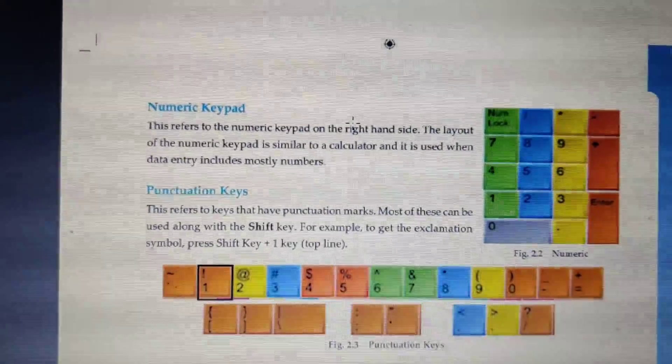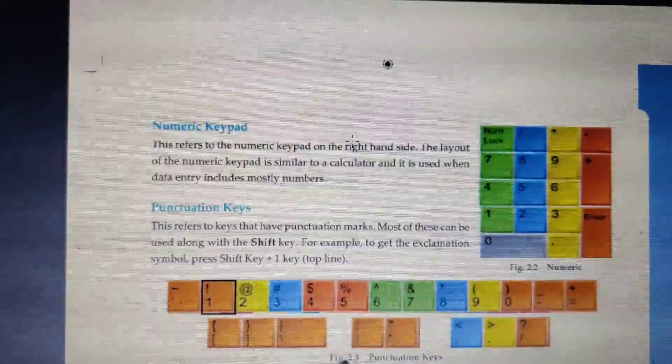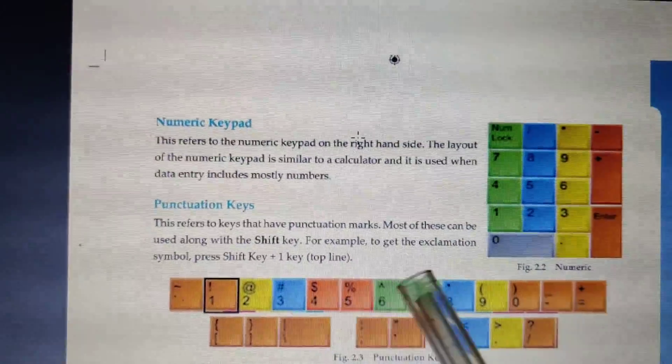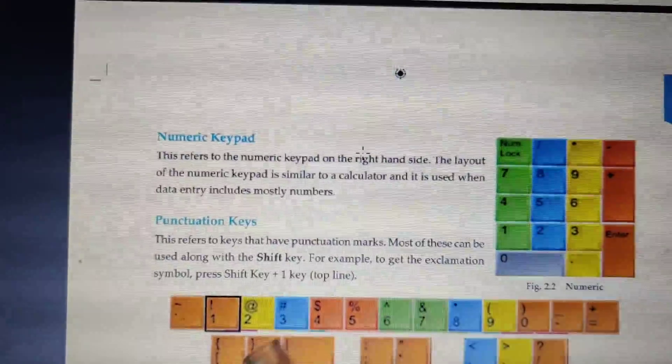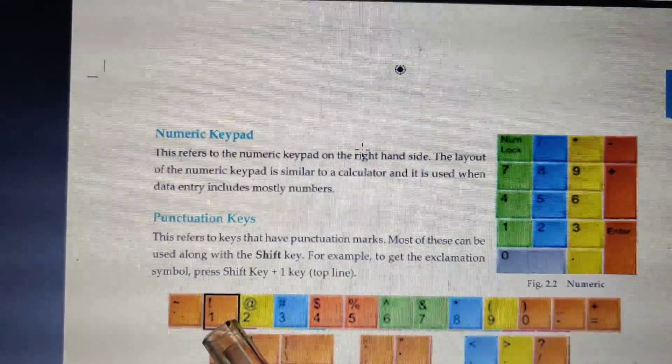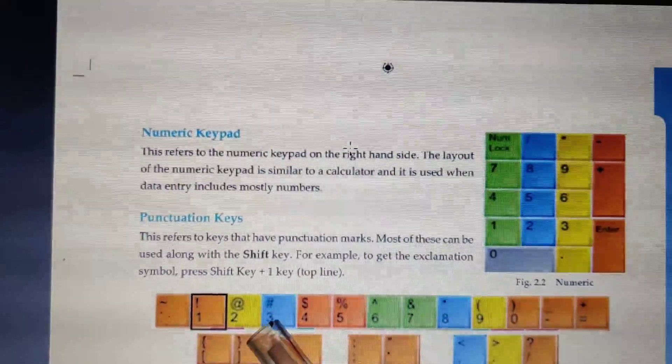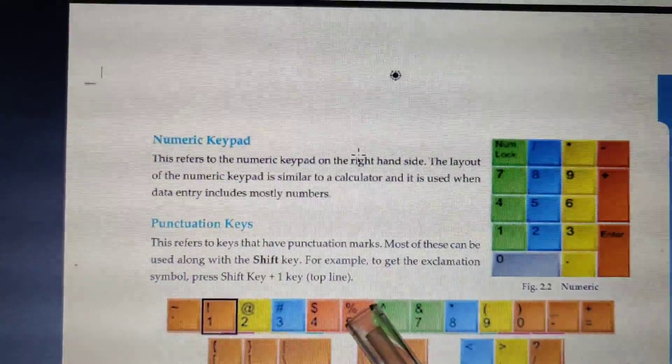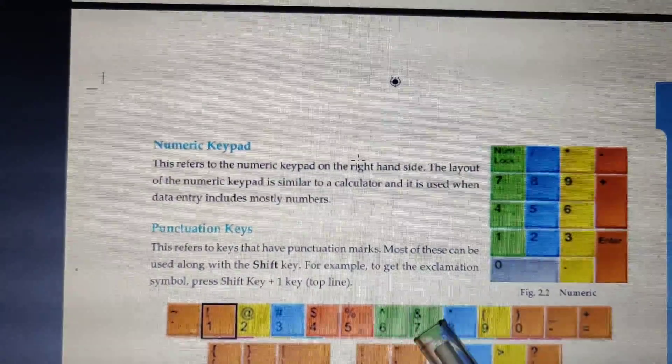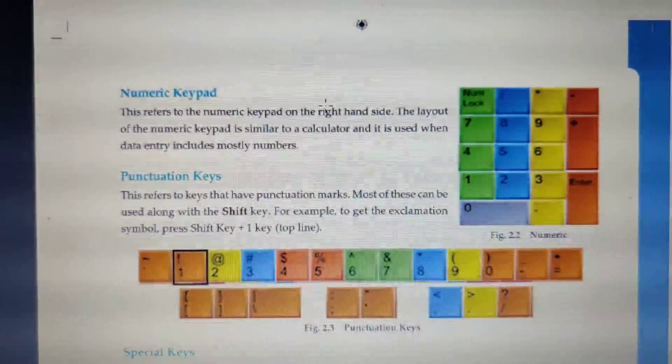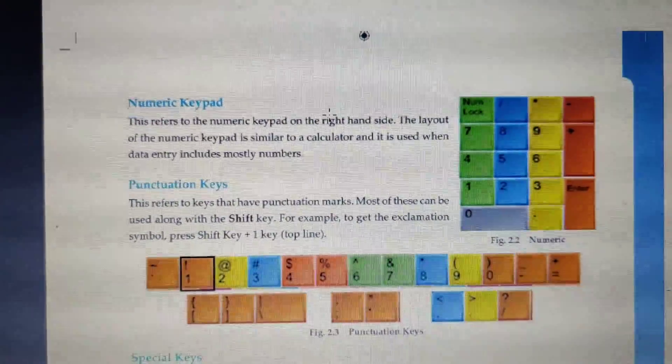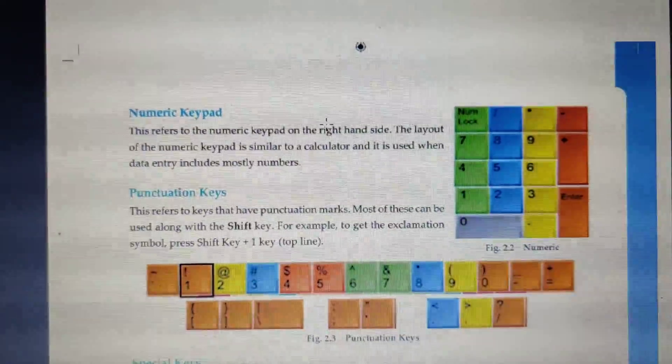Next is punctuation keys. So here you can see these particular numbers 1, 2, 3, 4, 5, 6, and you can see the punctuation keys which is exclamation mark, at the rate, hashtag, dollar, percentile, caret, and so on. These keys refer to the punctuation marks. Most of these can be used along with the Shift key. For example, to get the exclamation symbol, press Shift plus 1 key.